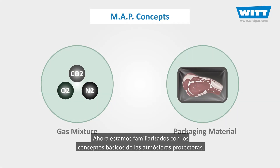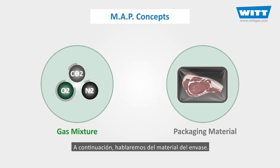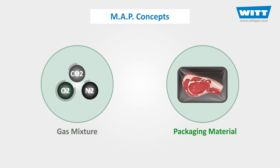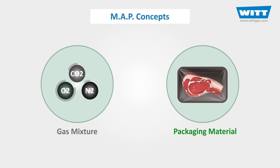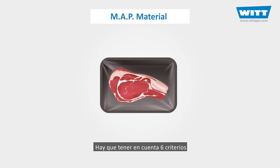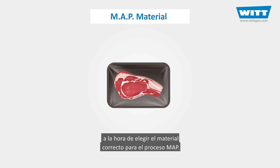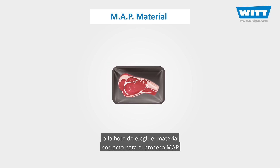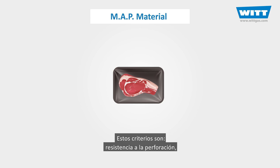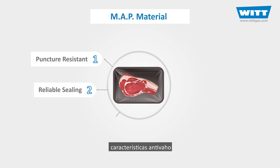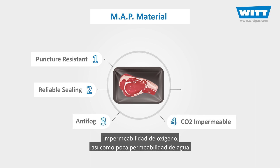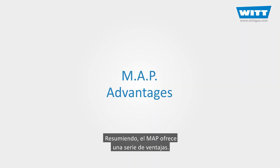Now that we've got familiar with the gas mixture concepts, let's see how we select the best packaging material, as it's essential to maintain the quality and safety of MAP foods. There are six main characteristics to consider when selecting packaging material for modified atmosphere packed foods: resistance to puncture, sealing reliability, anti-fogging properties, carbon dioxide impermeability, oxygen impermeability, and low water transmission rate.